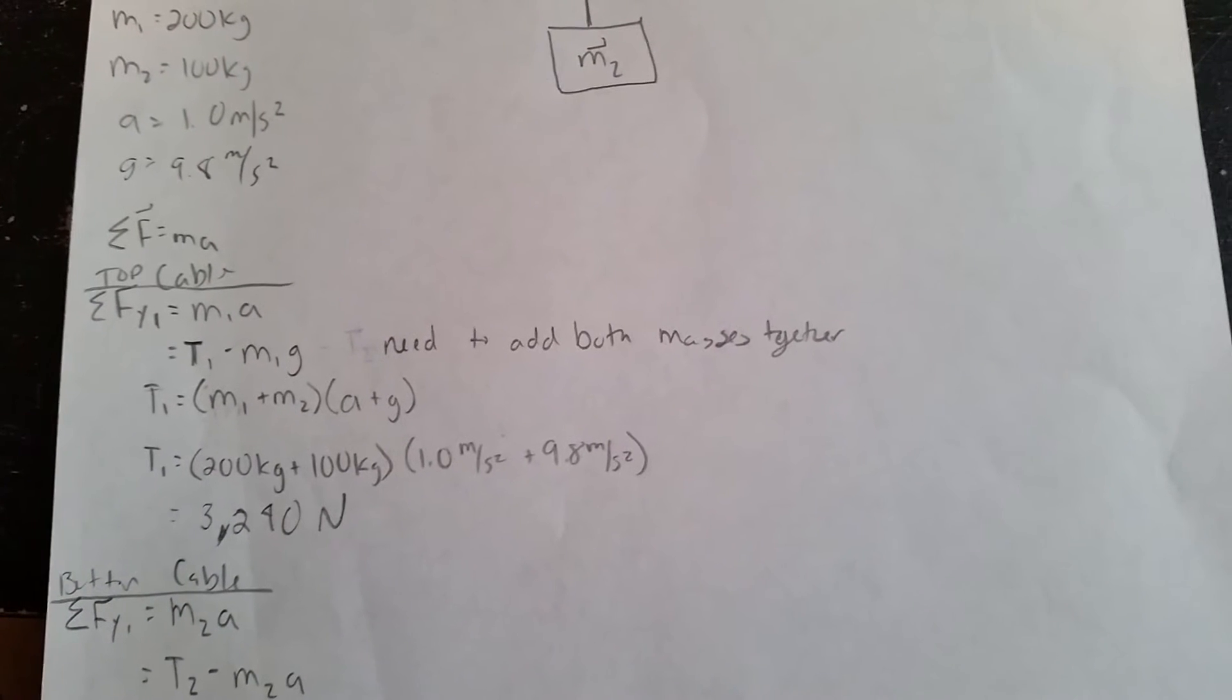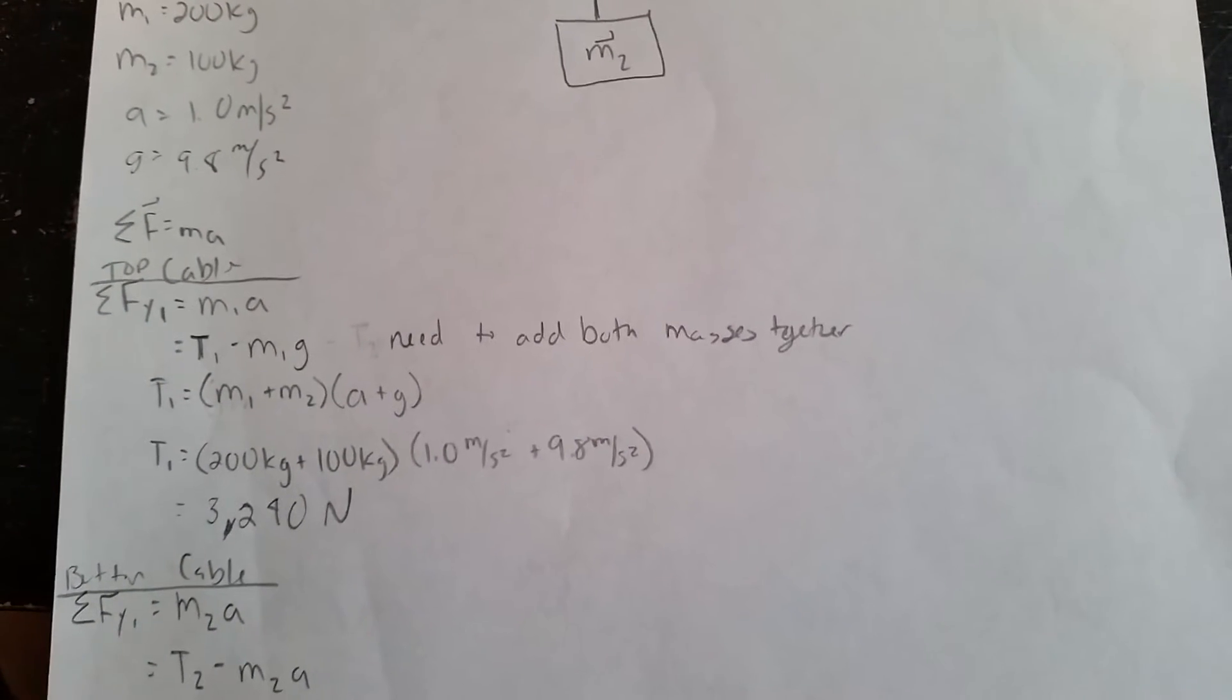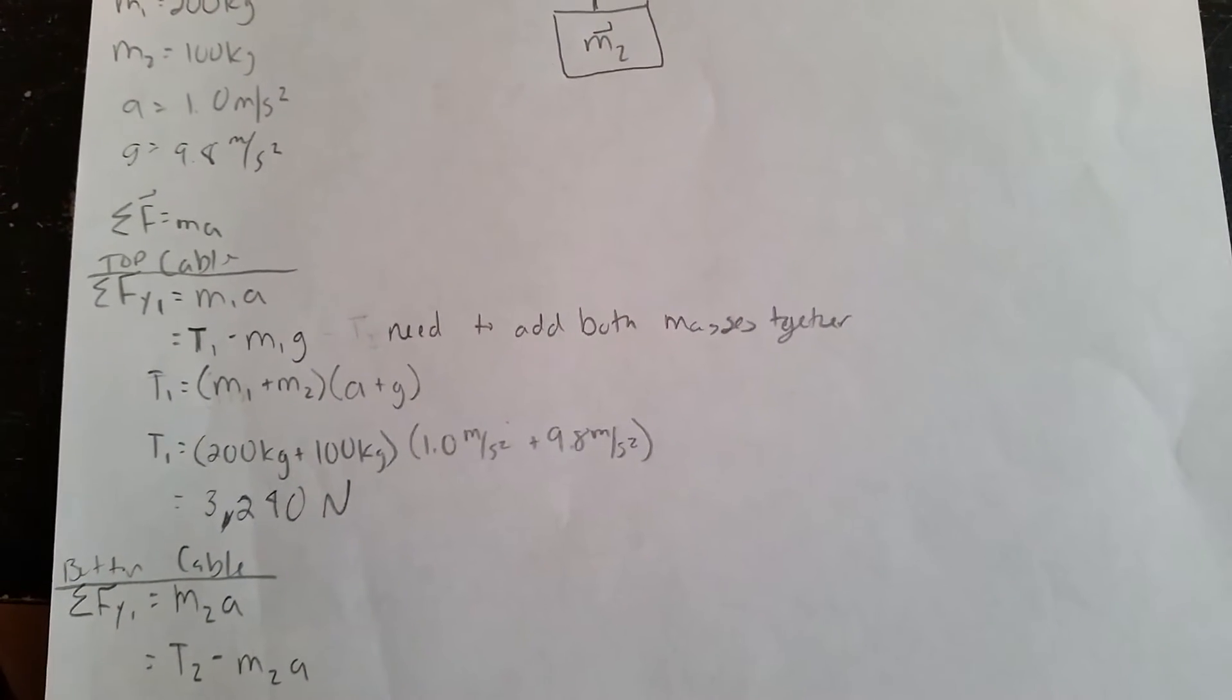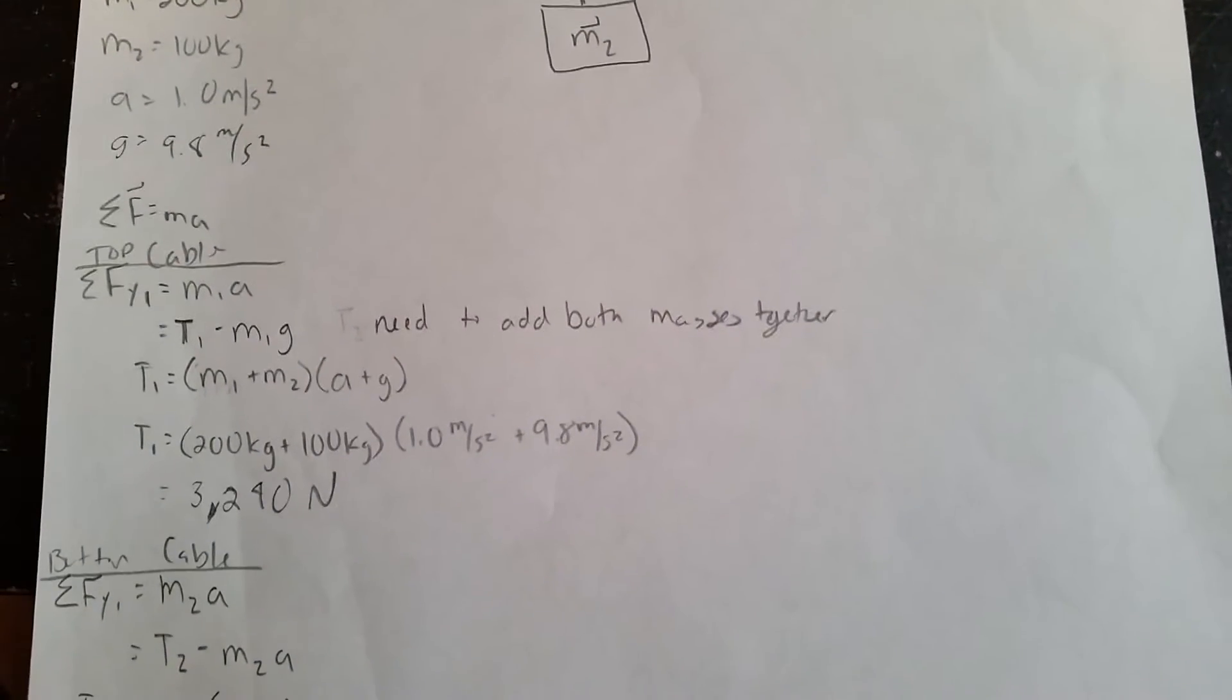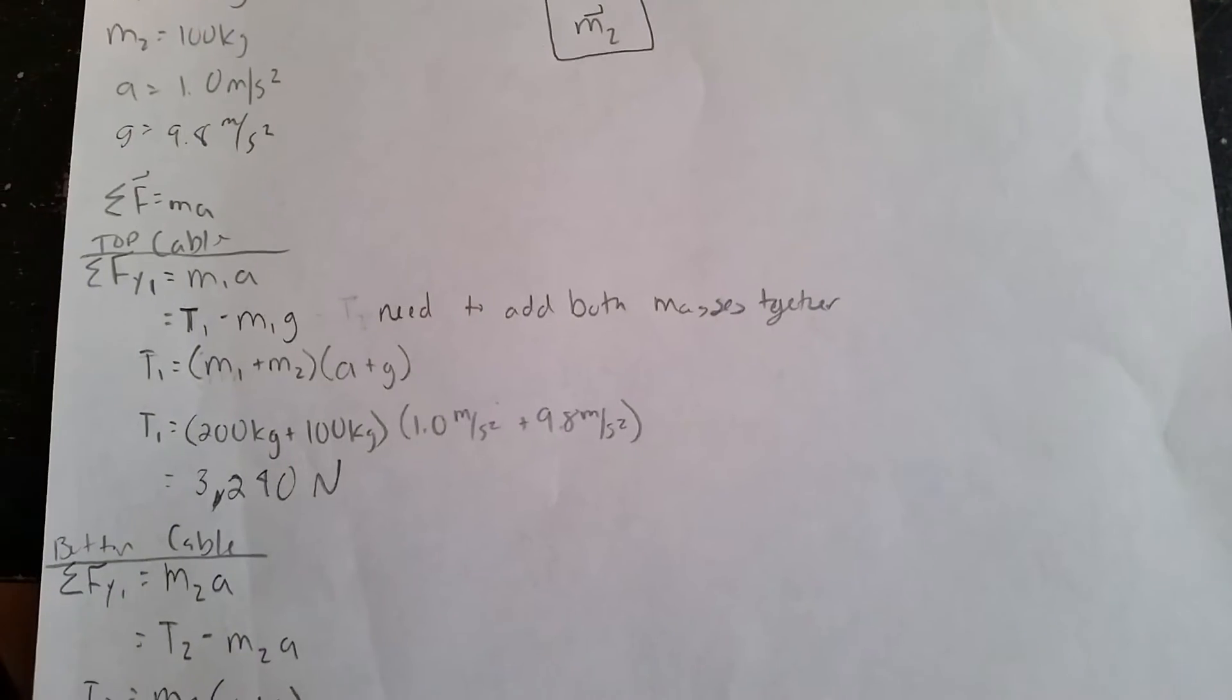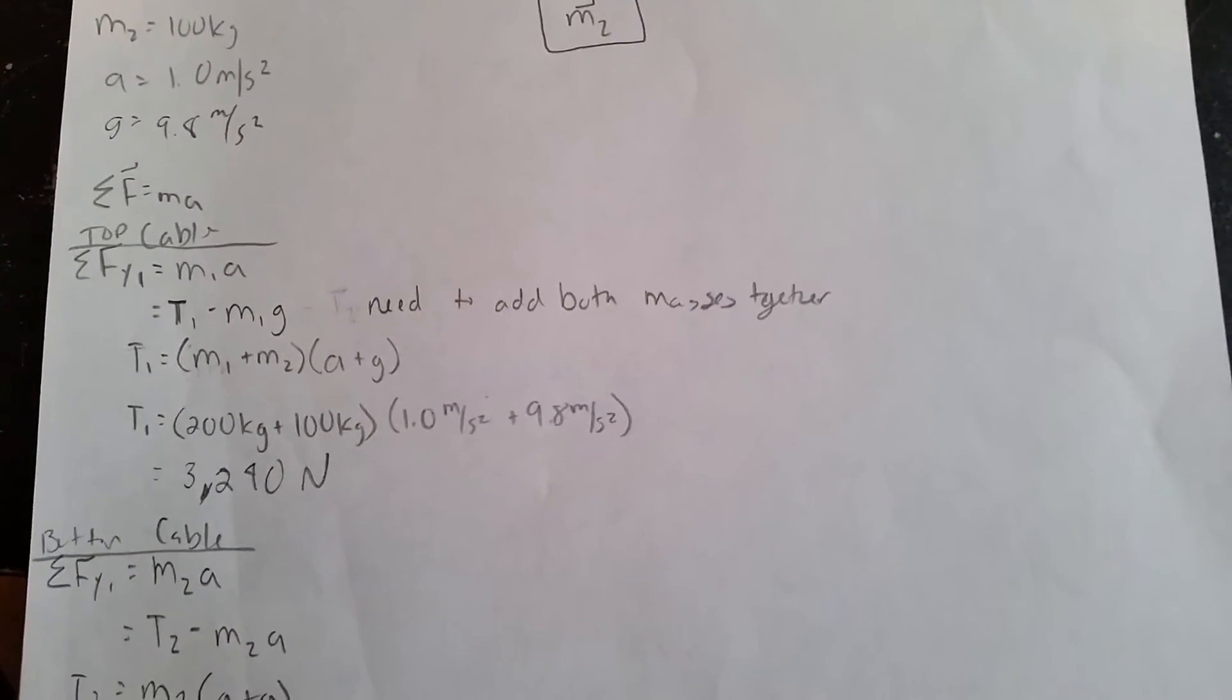Being that there is another block attached to the first block, what I did was I added both the masses together. So I get T1 is equal to m1 plus m2, and then I multiply that by acceleration times gravity.